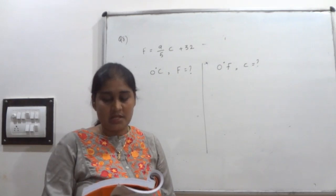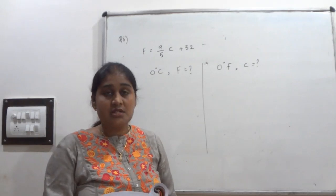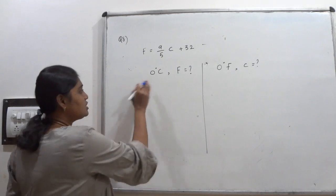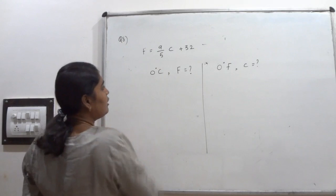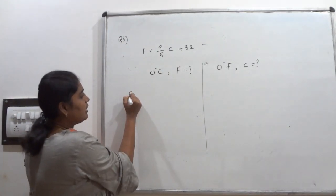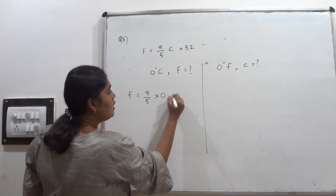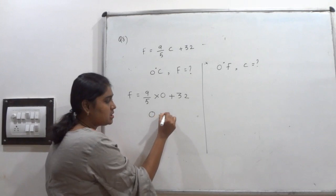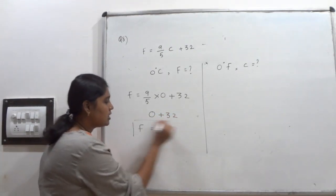Fourth part, first option: if the temperature is 0 degree Celsius, what is the temperature in Fahrenheit? Keep C equals 0 in the equation: F equals 9 by 5 into 0 plus 32, which equals 32. Fahrenheit is 32 degrees.